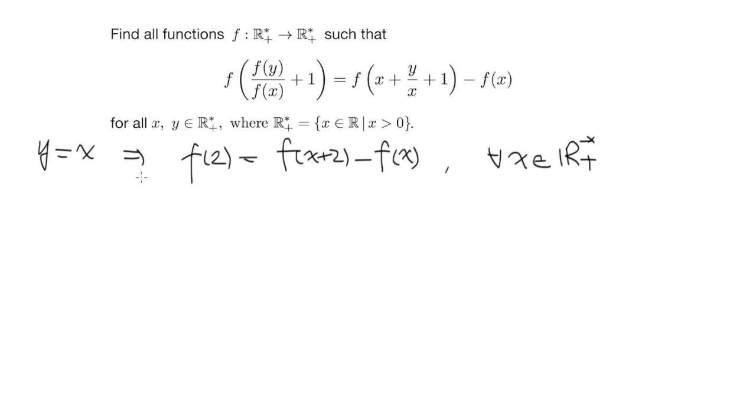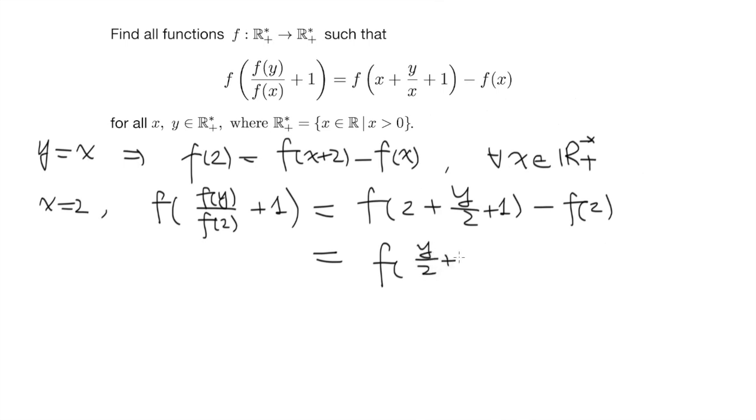So a second thing we can take x equals to 2, then this gives f of f(y) over f(2) plus 1 equals to f(2 plus y over 2 plus 1) minus f(2). So we have this f(2) plus something minus f(2), then we can use this first identity, and this is equals to f of y over 2 plus 1.